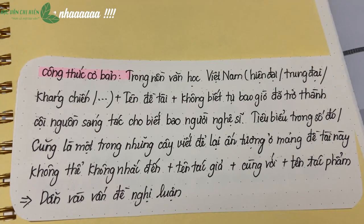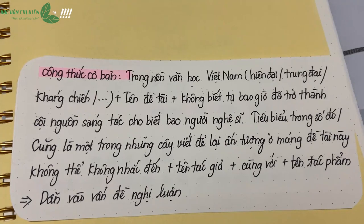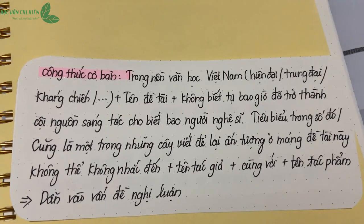Đối với dạng viết bài văn, mở bài gián tiếp bao giờ cũng sẽ là lựa chọn tối ưu nhất. Thế nên các bạn nên thay đổi những phần dẫn dắt, vì chính những phần dẫn dắt đó sẽ tạo ra sự đặc biệt cho mở bài. Hãy chú ý: công thức của mở bài gián tiếp sẽ là dẫn dắt cộng với đặt vấn đề. Trong phần đặt vấn đề, chúng mình phải nêu được vấn đề nghị luận cùng với phạm vi phân tích.